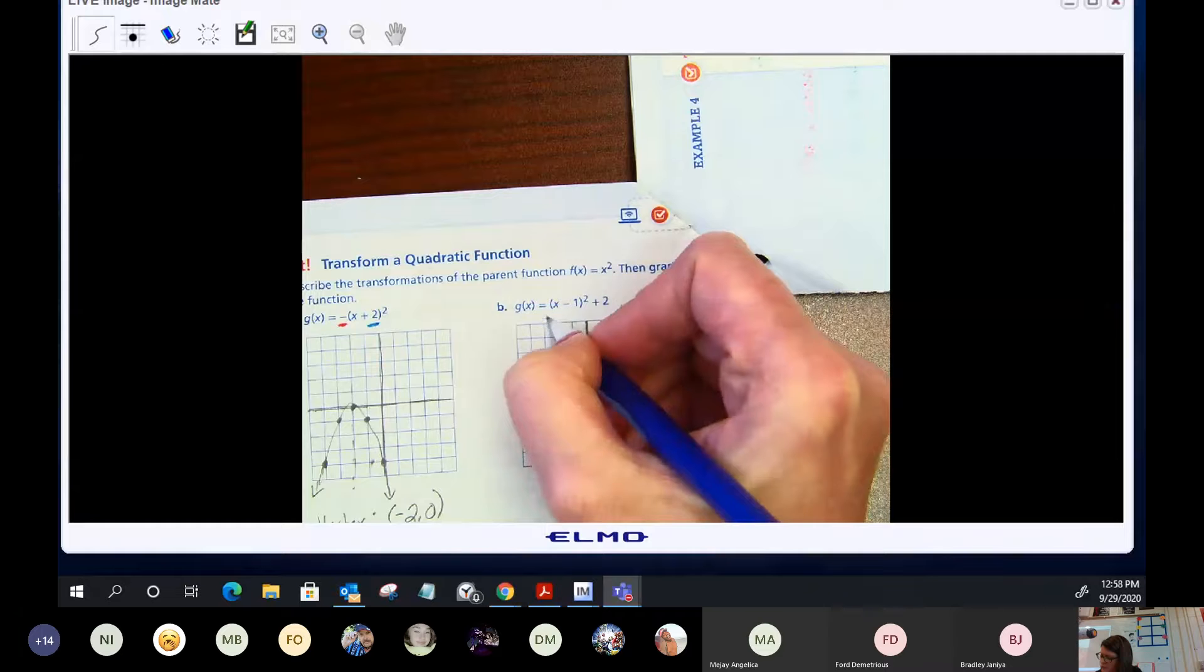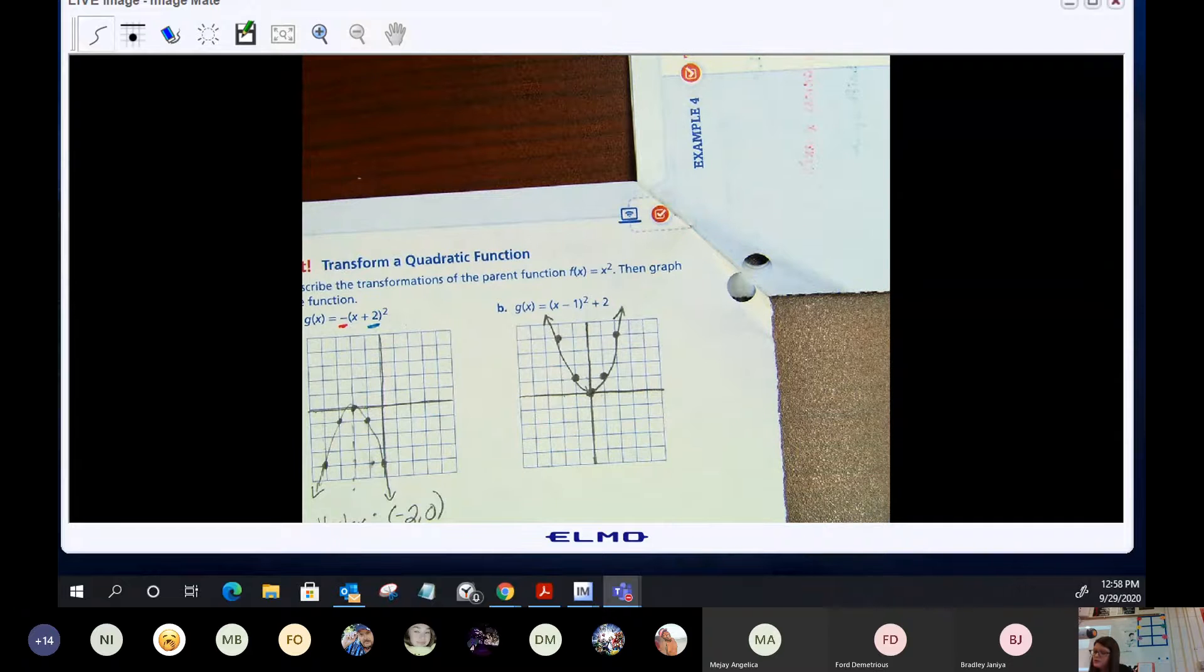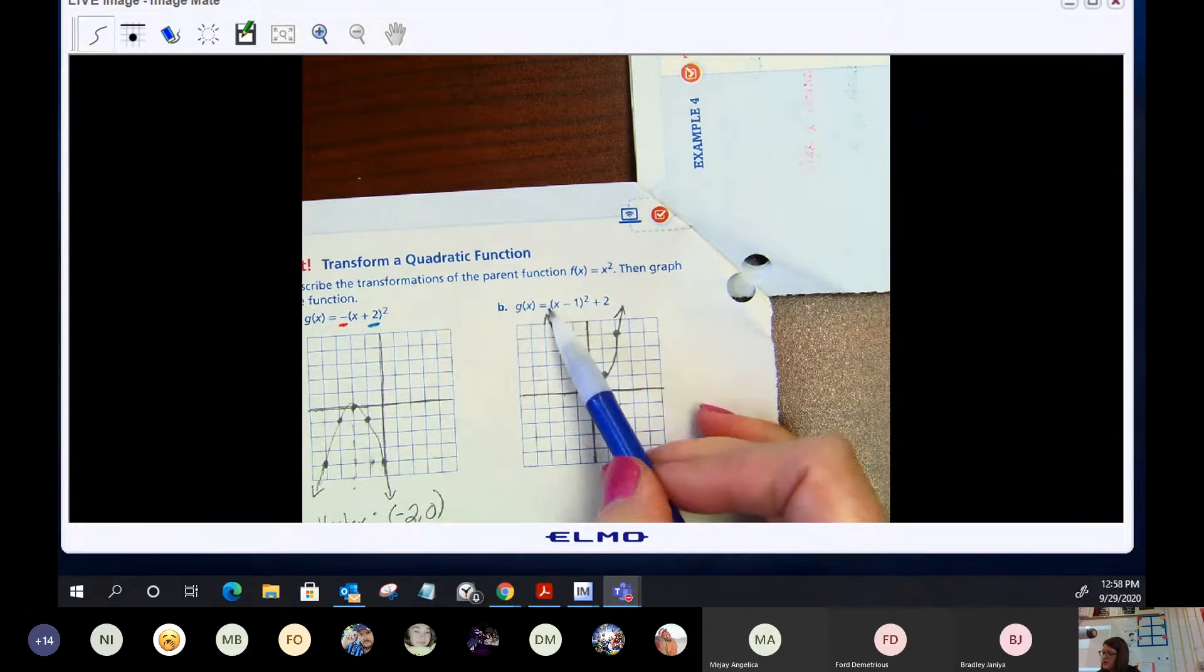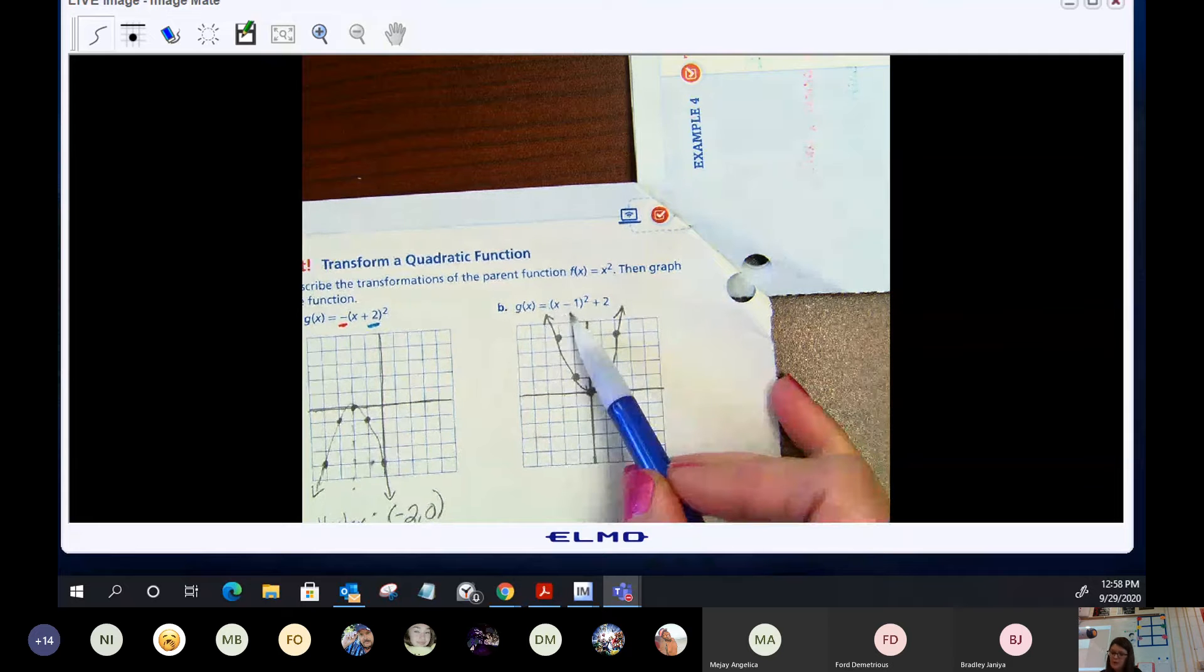x squared. This is the graph of the parent function f of x equals x squared. Now let's take a look at our transformations. Notice there's nothing hanging out front, so I don't have a reflection. There's no vertical stretch, there's no vertical compression.